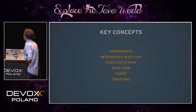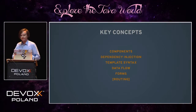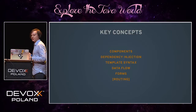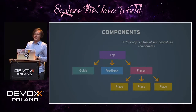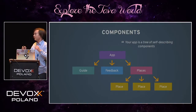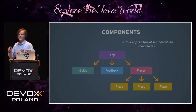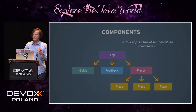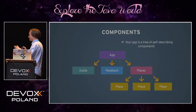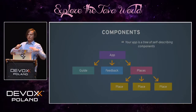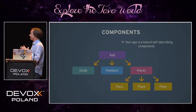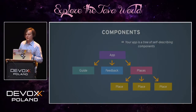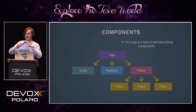Our agenda for the rest of the talk: we'll go shortly through components, mention dependency injection, syntax, dataflow, and forms. What is a component? It is the main building block of Angular — the quantum of Angular. It is self-standing and self-describing: it knows how to cooperate with its host component, knows how to render itself, knows its own dependencies, and has APIs for input and output. It is a really reusable piece of your application.